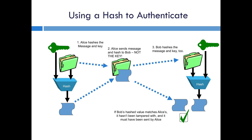In step 3, Bob receives the message. Since he already has a copy of the key, he can duplicate Alice's calculation — he hashes the message and the key together to produce a hash value. If Bob's hash value matches the value that Alice transmitted with the message, then he knows two things. First, the message has not been tampered with; if an attacker had tampered with it, Bob's calculation would have been on a different message and the hash value would have been different. The hash function is carefully designed so that without knowing the key, an attacker could not modify the message in such a way that it would produce a correct hash. Secondly, Bob knows that the message came from Alice, or at least someone who knew the pre-shared key. Although the key was not transmitted on the link, it was intrinsic to the calculation, and without it an attacker could not produce a matching hash value.